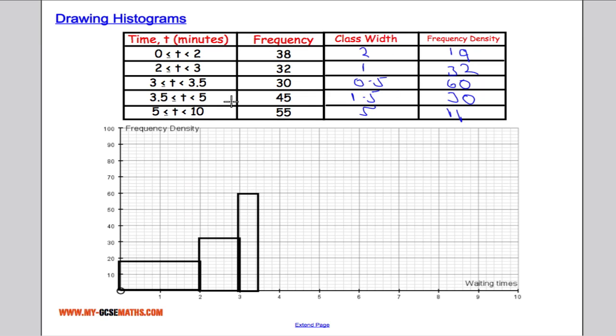Between 3.5 and 5 we have 30. I'm sorry, 3.5 and 5 we have 30, which is right here.